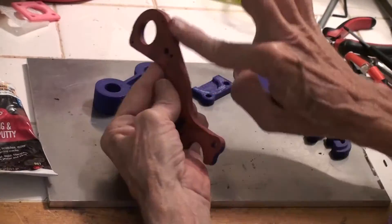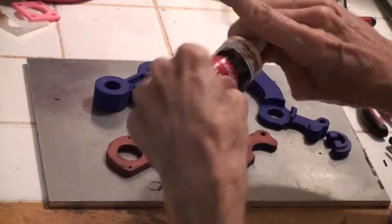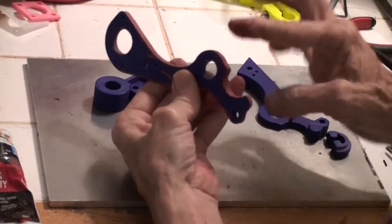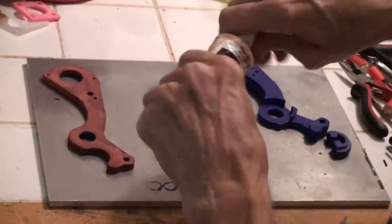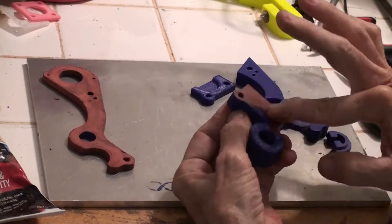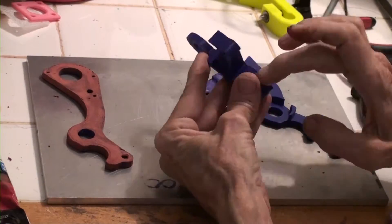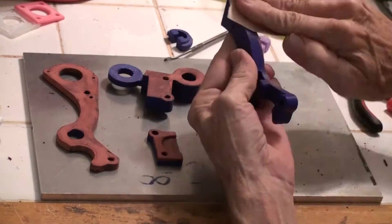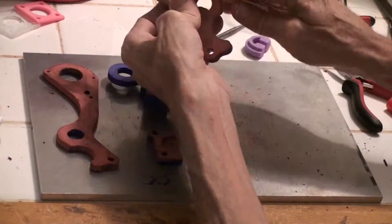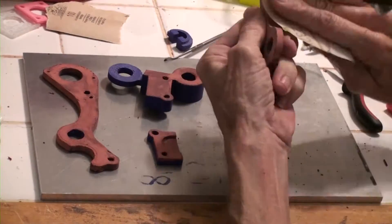I'm using auto body filler to fill in all the little ridges from 3D printing. Once this is hardened, it will be sanded with several different grits of sandpaper going from coarse to fine.